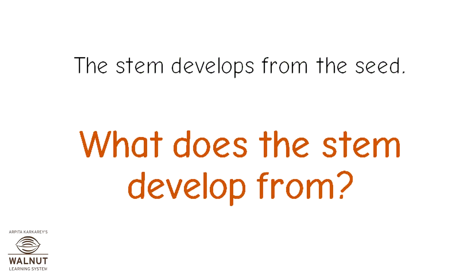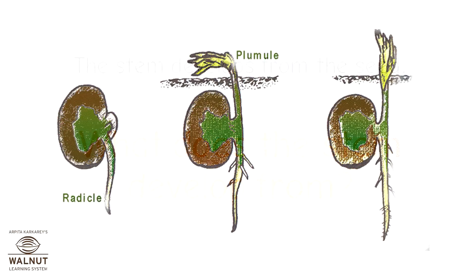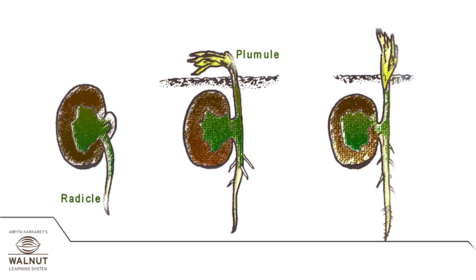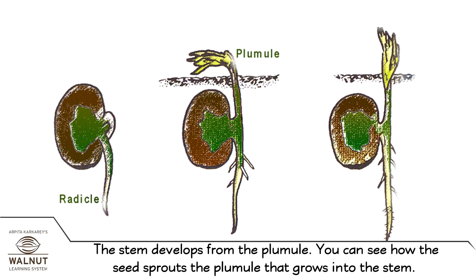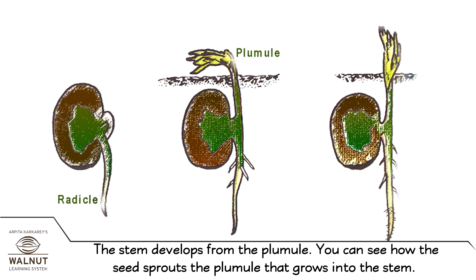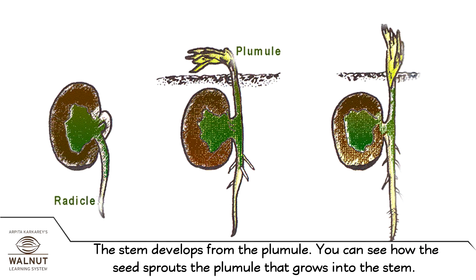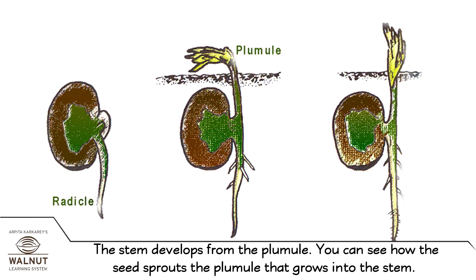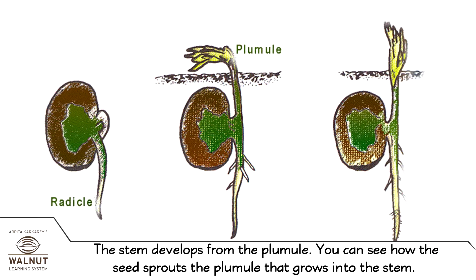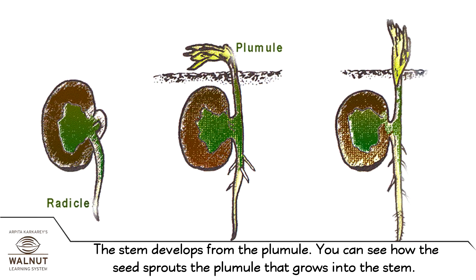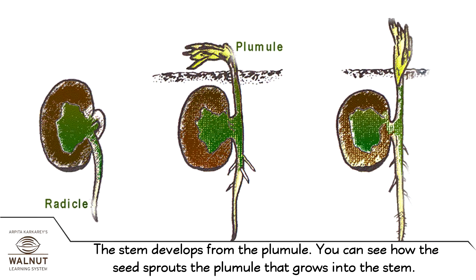The stem develops from the seed. What does the stem develop from? The stem develops from the plumule. You can see how the seed sprouts the plumule that grows into the stem.